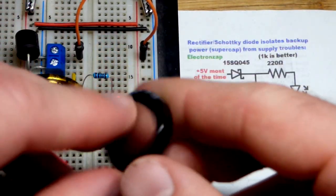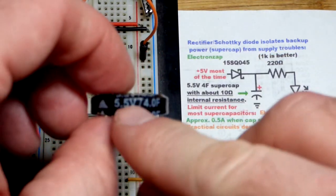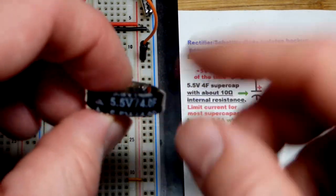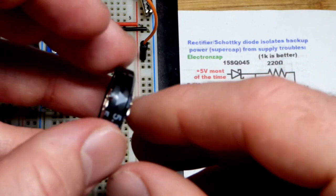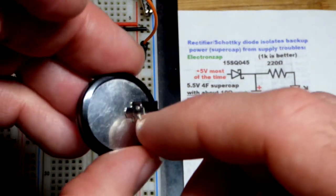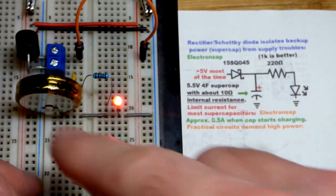This is also a 5.5 volt 4 farad little super capacitor right there, negative side. It's polarized. You've got to charge it in the right direction, positive over there.